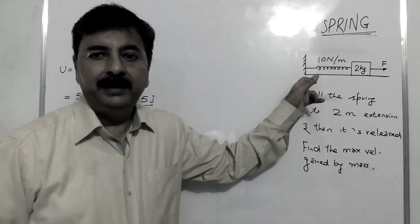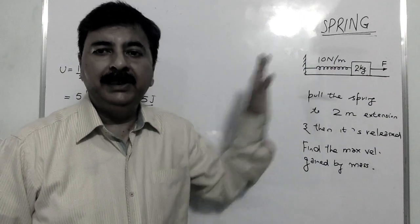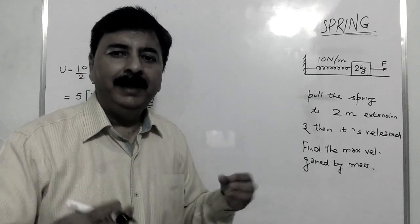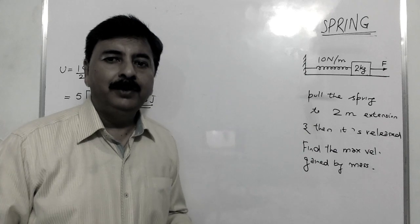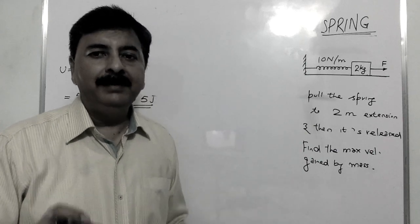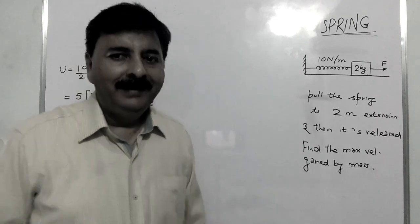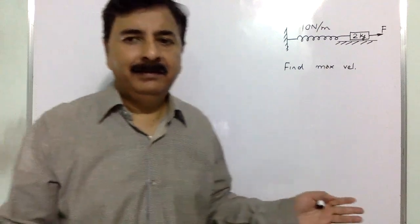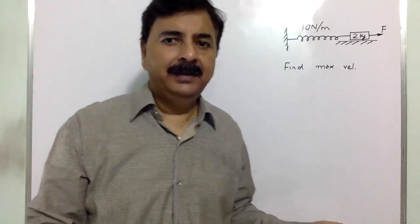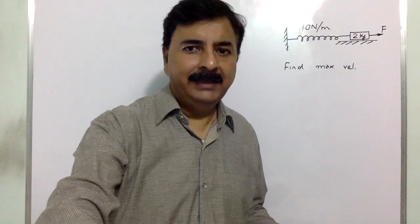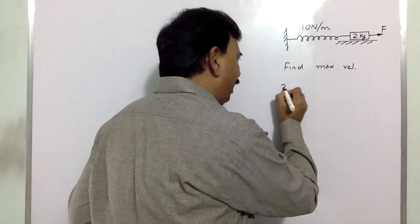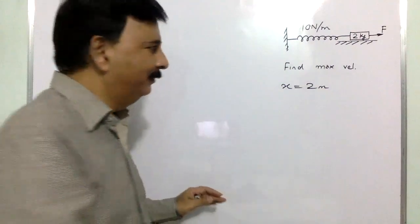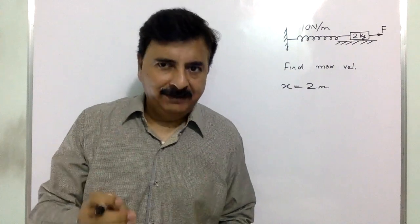Then you have to find the maximum velocity gained by the mass. A spring has a constant 10 N per meter attached to the 2 kg block. You have to pull the spring and elongate it 2 meters and then you have to leave it. When it is left, the mass has maximum velocity gained during the whole journey. You have to find it. It is very simple. Today, we will take special questions from spring.